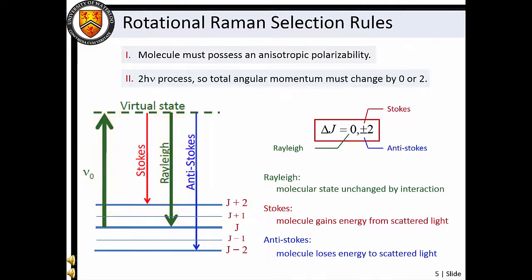This arises due to the fact that Raman scattering is a two-photon process and angular momentum must be conserved. Note that if the molecular state is unchanged by the scattering interaction, the process is Rayleigh scattering. Thus, for the rotational Raman phenomenon, the Δj equals zero process is actually Rayleigh scattering. If Δj is plus two, the molecule gains energy from the scattering interaction and the scattered light is shifted to low frequency compared to the Rayleigh scattered light.